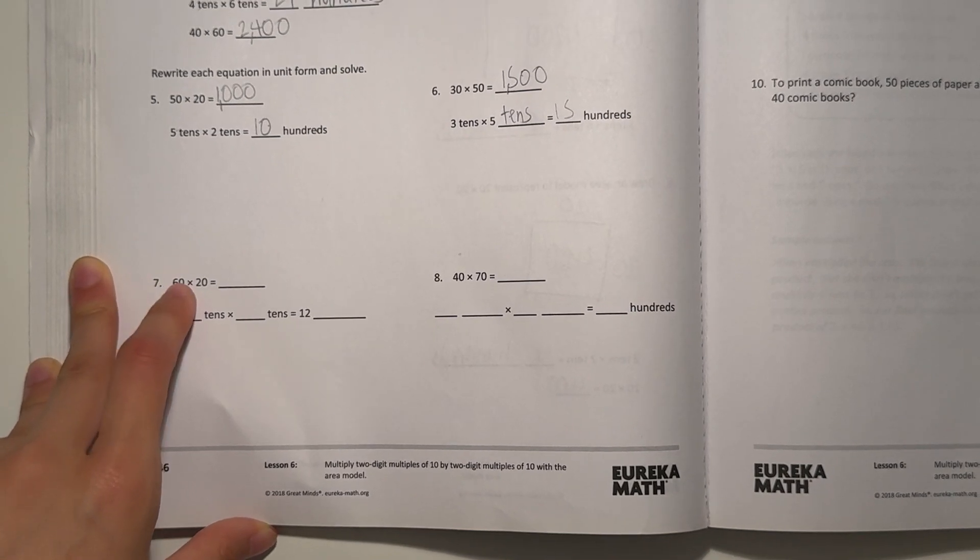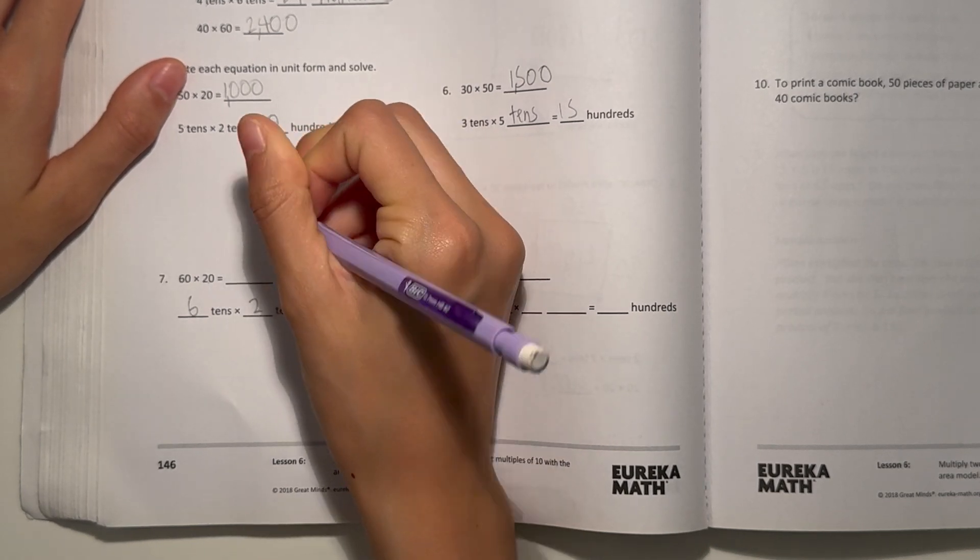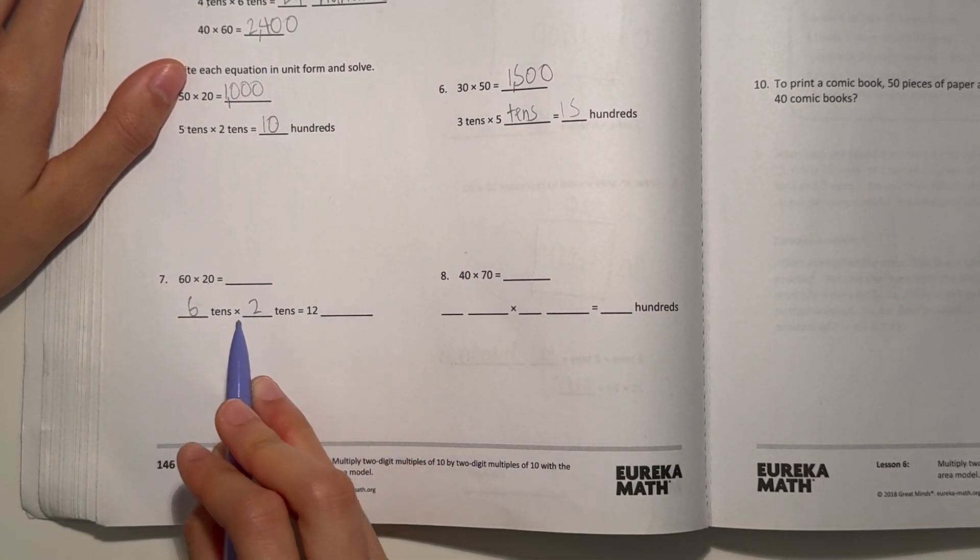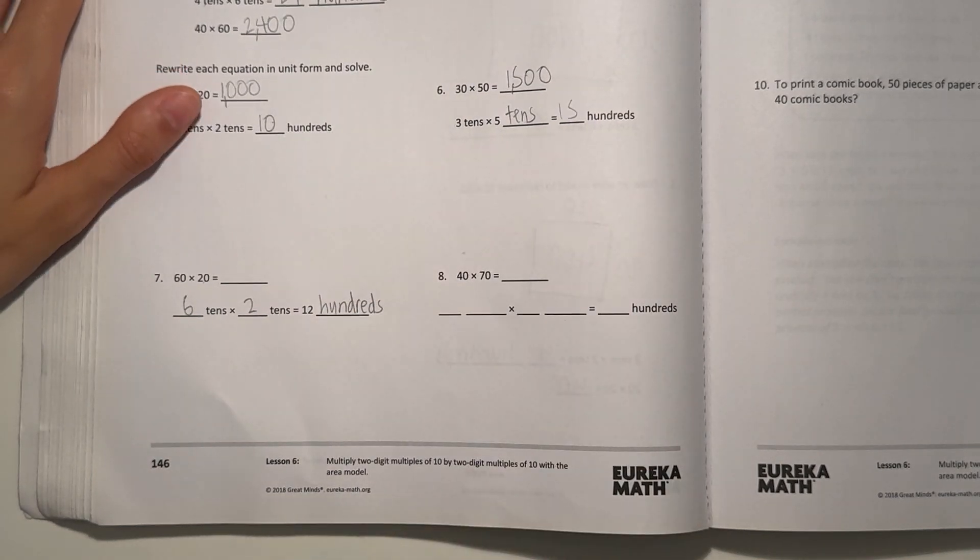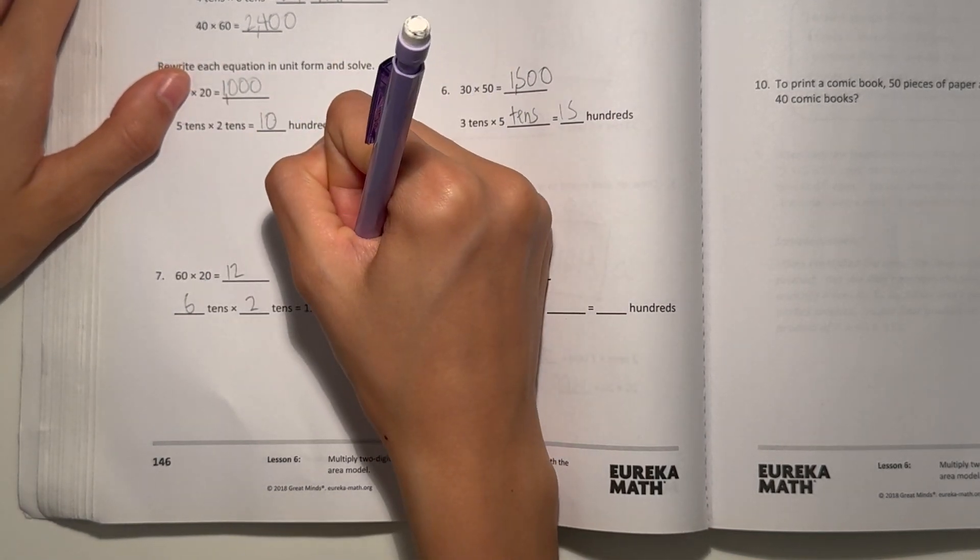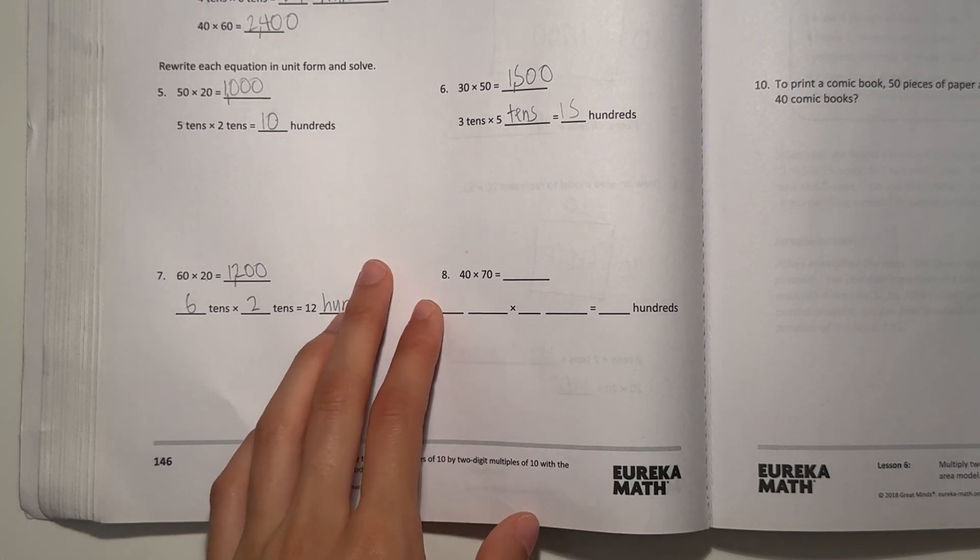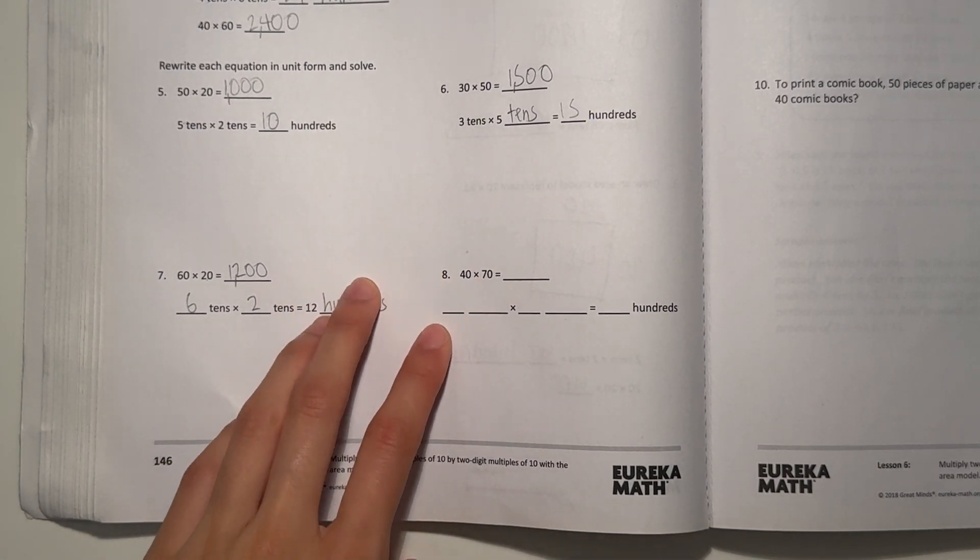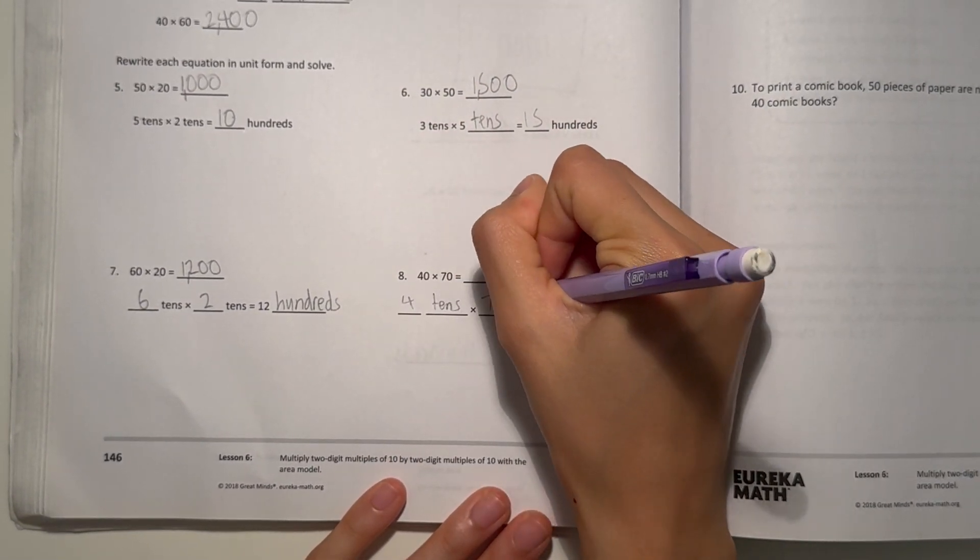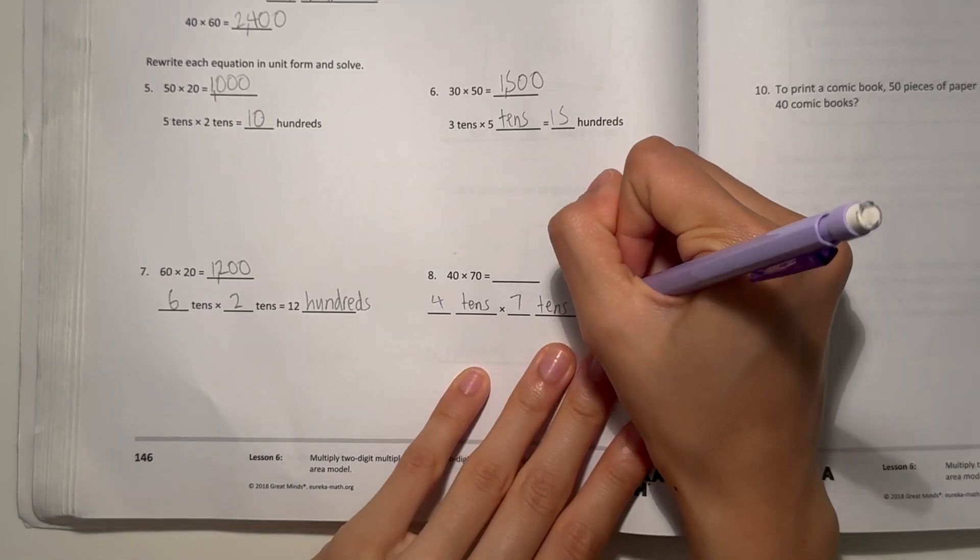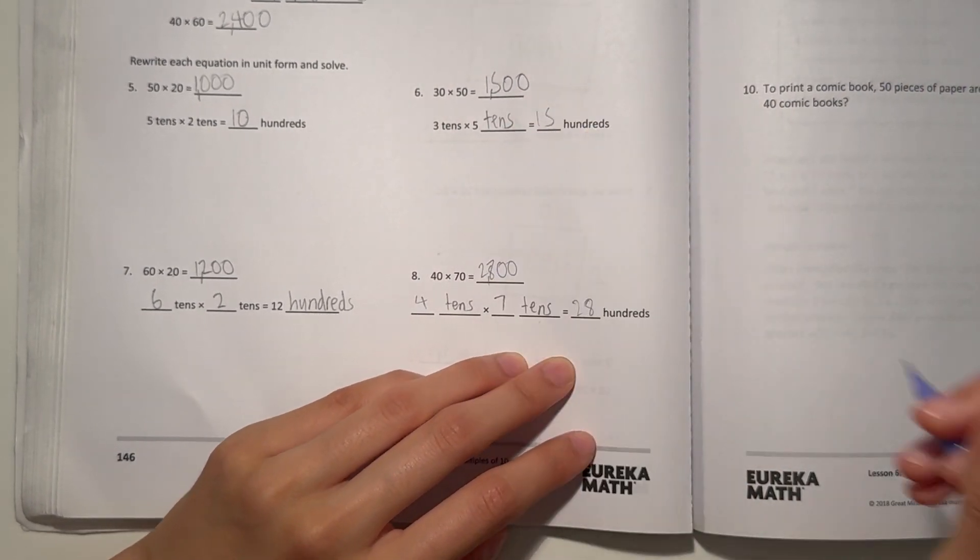Number seven, 60 times 20. So that's 6 tens times 2 tens. 6 times 2 is 12, and 10 times 10 is 100, so that's 12 hundreds. You write the two zeros at the end because of hundreds, so your answer is 1,200. And number eight, 40 times 70. Think of it as 4 tens times 7 tens. 4 times 7 is 28 hundreds. Just write 28 and the two zeros at the end. That's 2,800.